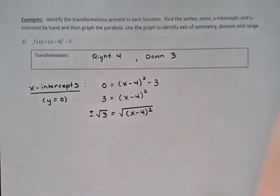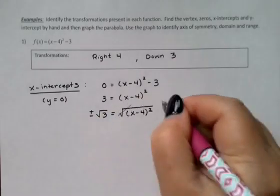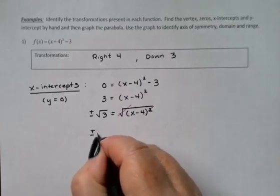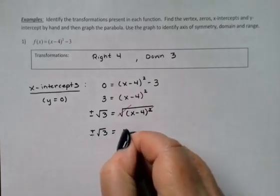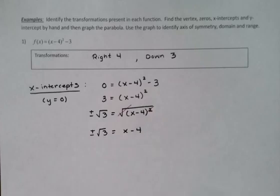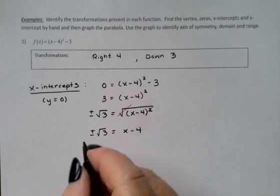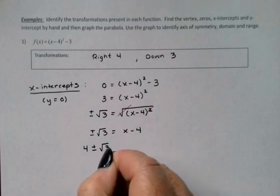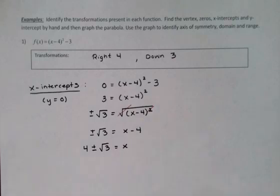I have to make sure to include both the positive and negative square roots. And then on the right-hand side, I've got some inverses going on here. The square root and the square do and undo, so I can get rid of those. And then adding the 4 over, I'm going to put it out in front. 4 ± √3 is equal to x.